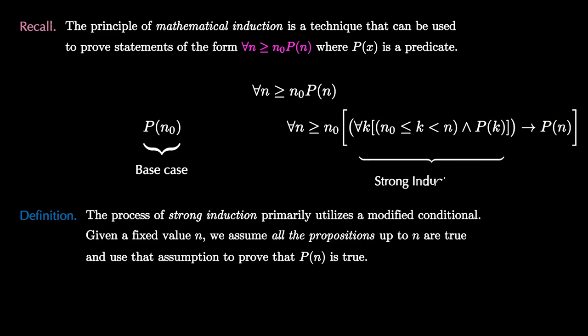This is what the modified logical statement looks like. The new change is that the hypothesis of the conditional statement now remembers that P(k) is true for all k between n₀ and n. The process of regular induction assumed that the predicate was true for one value of n and used that assumption to show that it was true for the next value of n. Strong induction makes a stronger assumption that the predicate is true for all the values between the base case and the n value we care about.